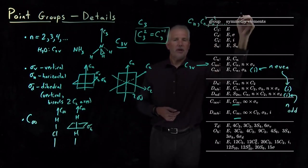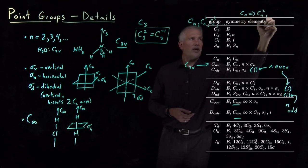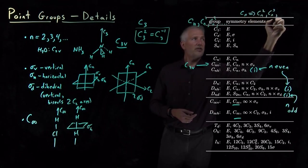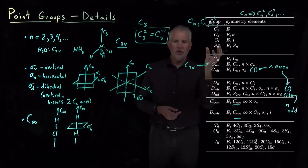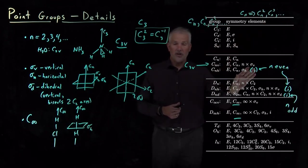Let me write that up here. If we have a CN, we also have a CN squared and a CN cubed and so on. All those additional amounts of that rotation also are symmetry elements.